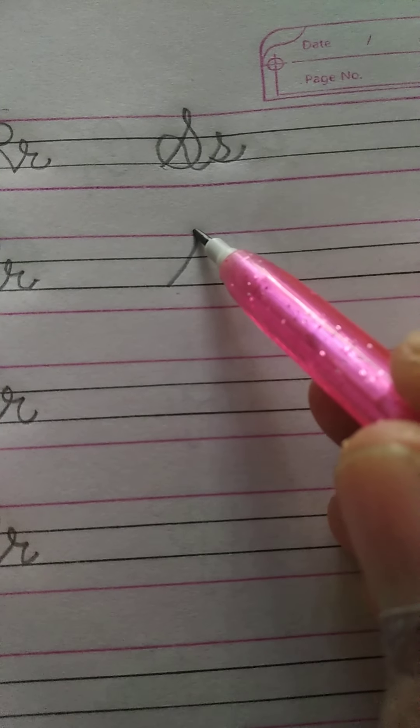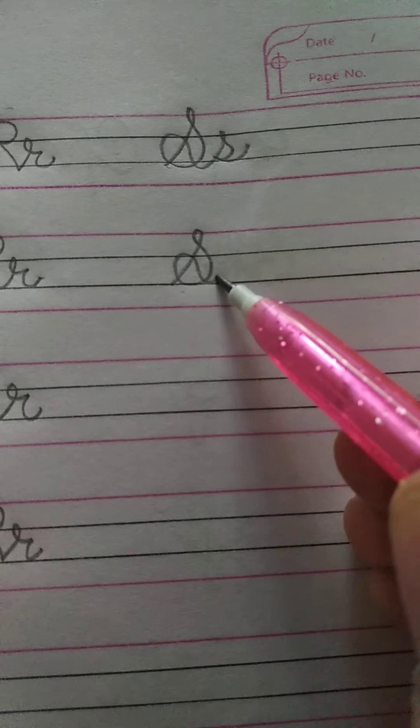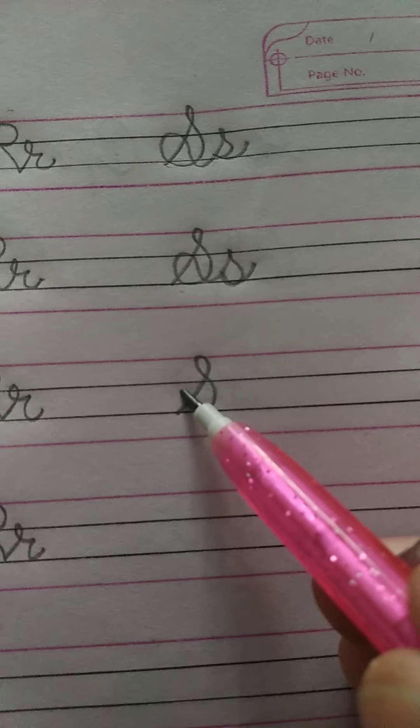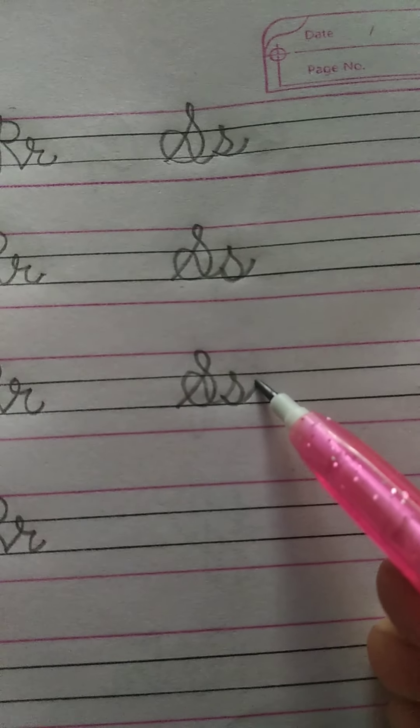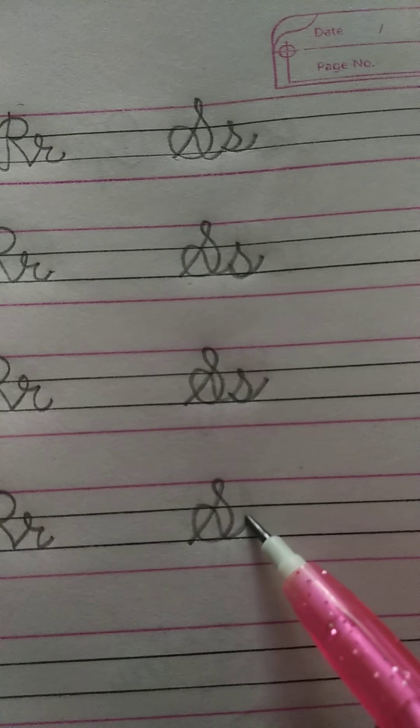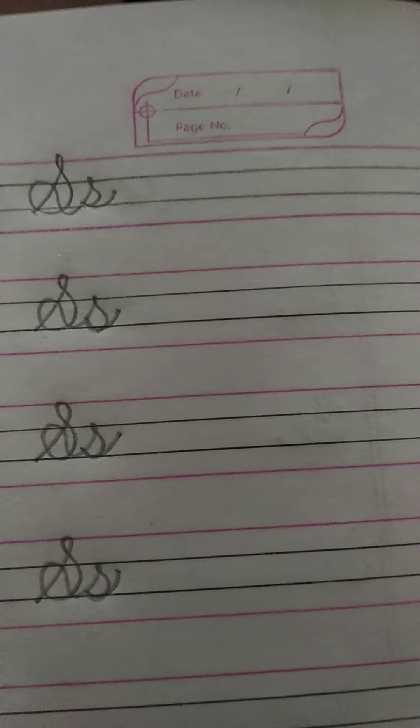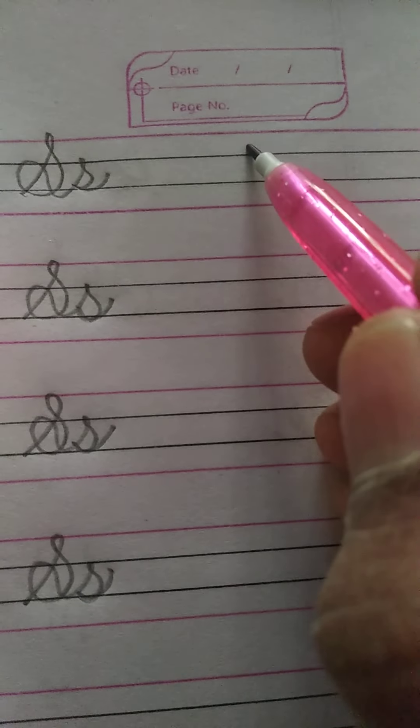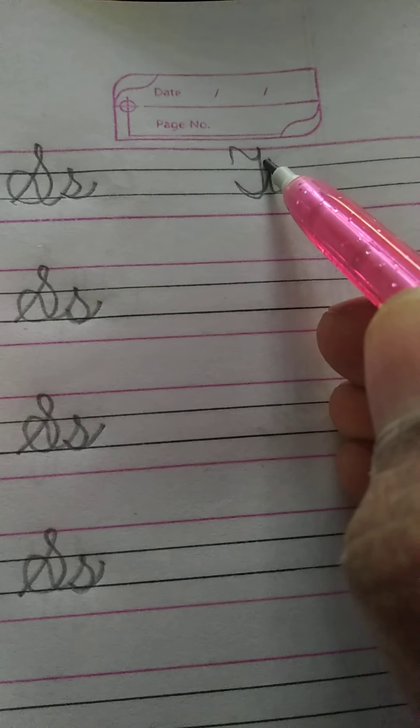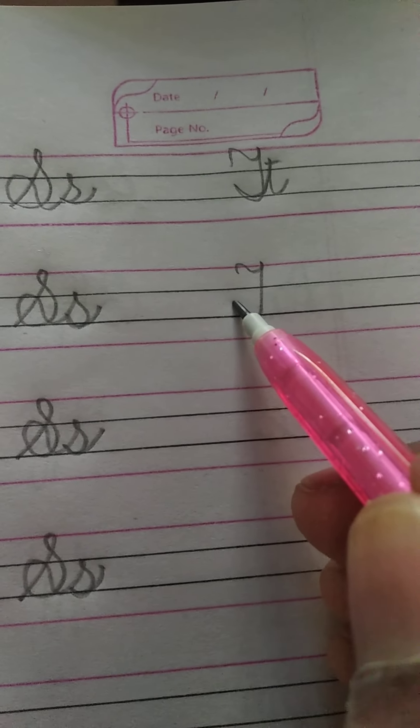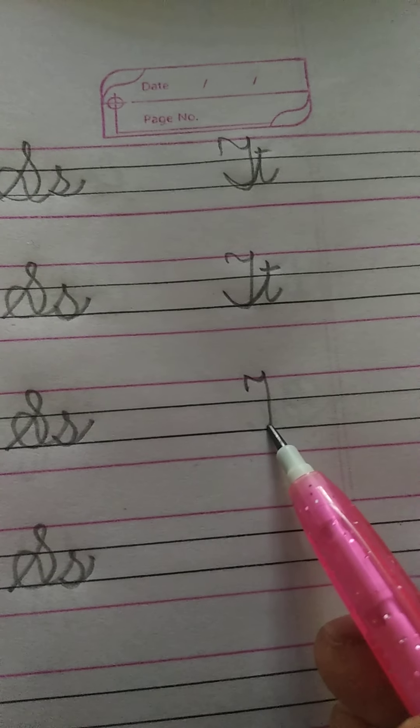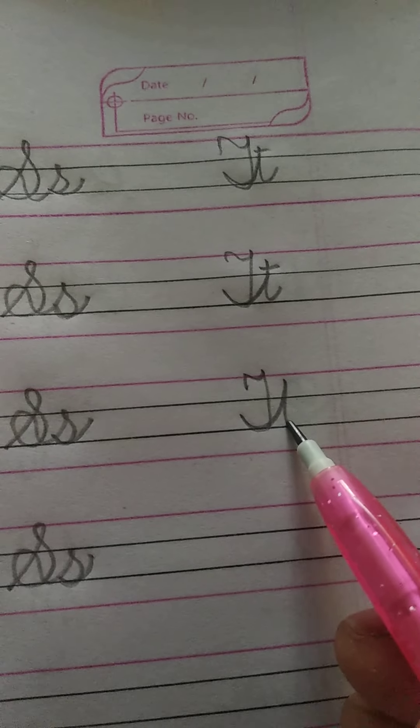S for Ship and Sheep. S for Ship and Sheep. S for T for Telephone and Tree. T for Telephone and Tree. T for Telephone and Tree.